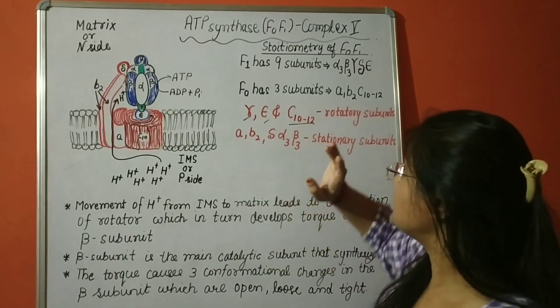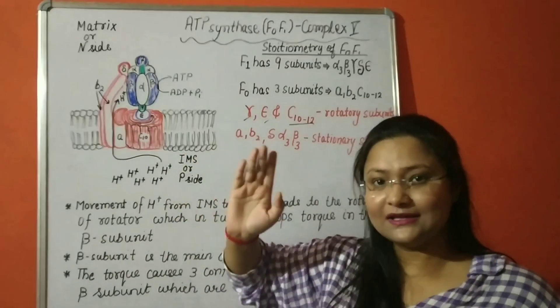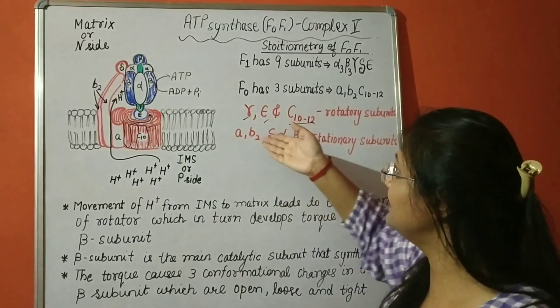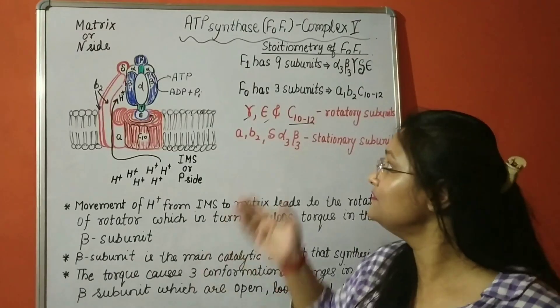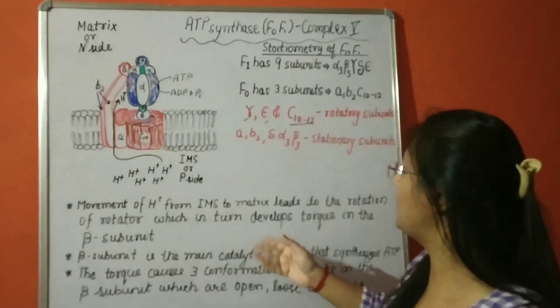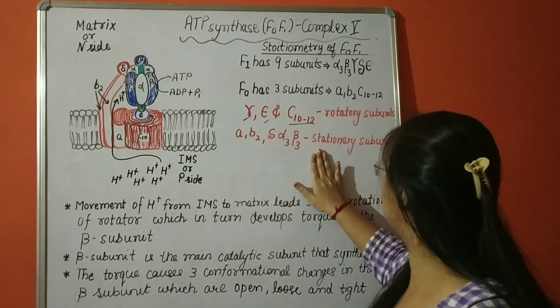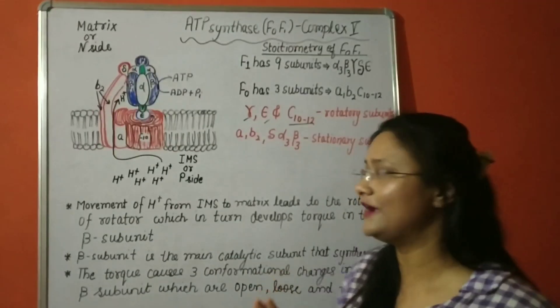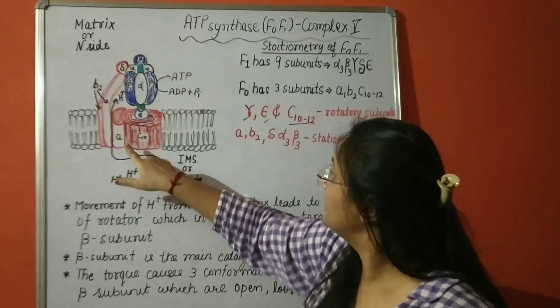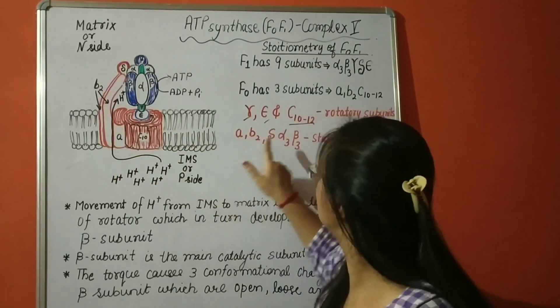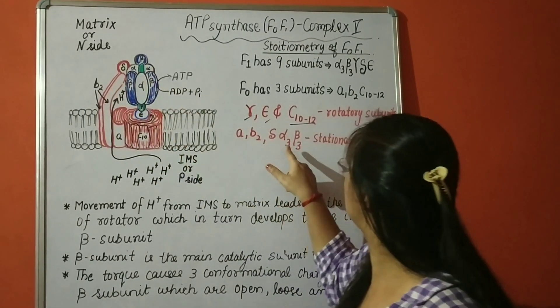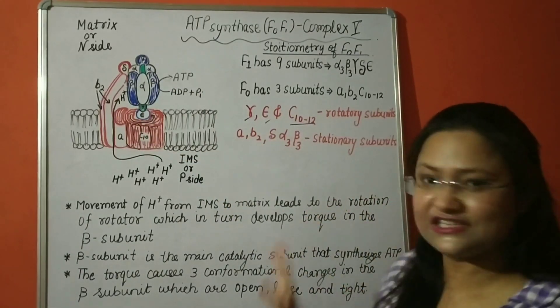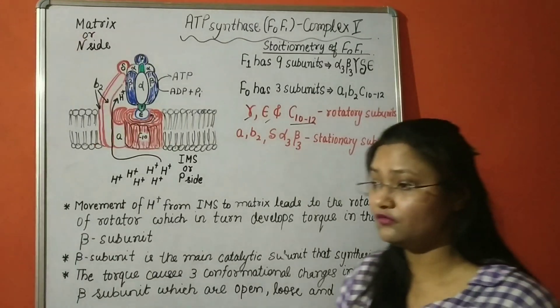We will discuss all this in binding change mechanism just now after completing all this. Now let us see what are the stationary subunits which do not move at all. A, B2, delta, alpha 3 and beta 3. They are all stationary subunits. They do not move.